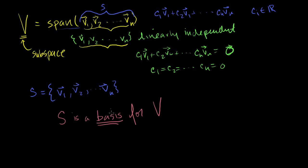If something is a basis for a set, that means those vectors' span can construct any of the vectors in that subspace, and that those vectors are linearly independent.